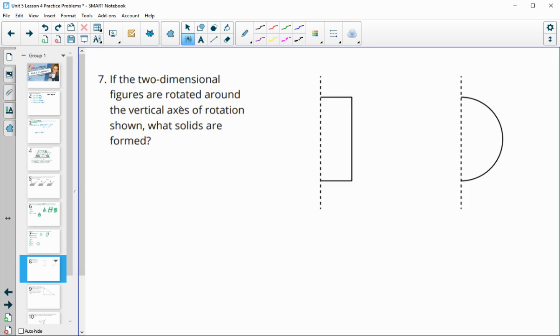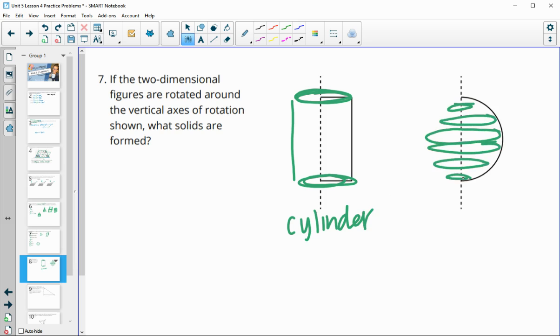If the two-dimensional figures are rotated around the vertical axis shown, what solids are formed? So remember that it's going to go circular, right? So it's going to rotate around here. So we'd end up with this. So this one's going to be a cylinder. And this one's going to rotate around here. So this one, you're going to get a sphere.